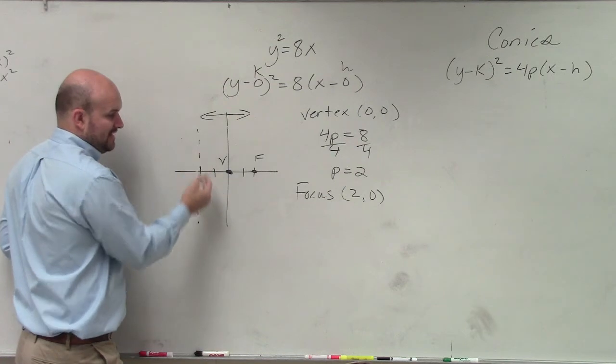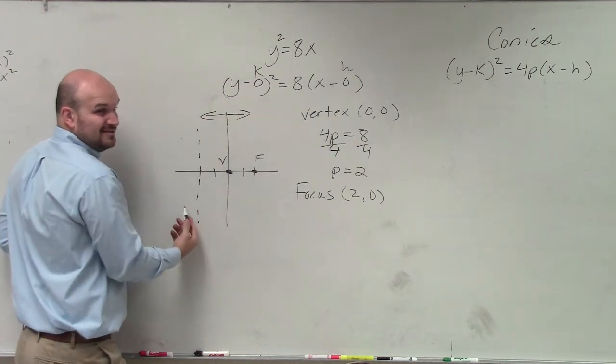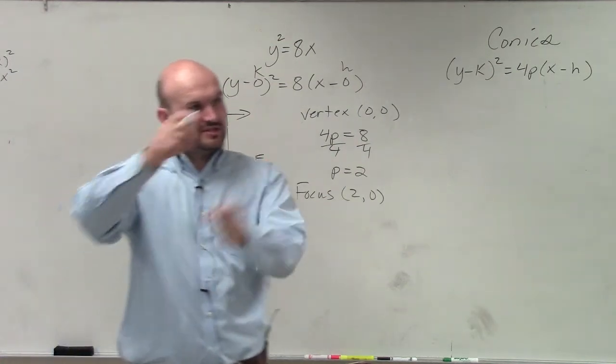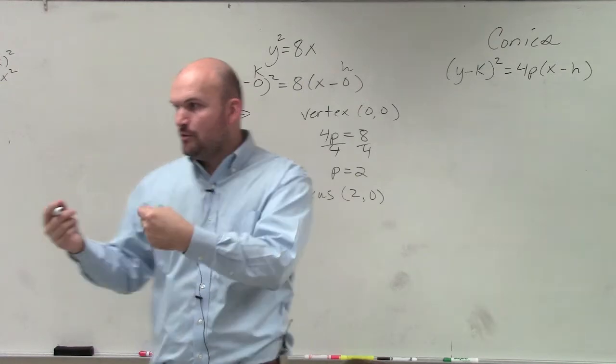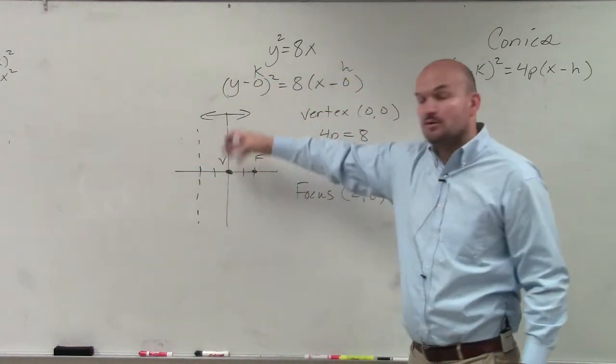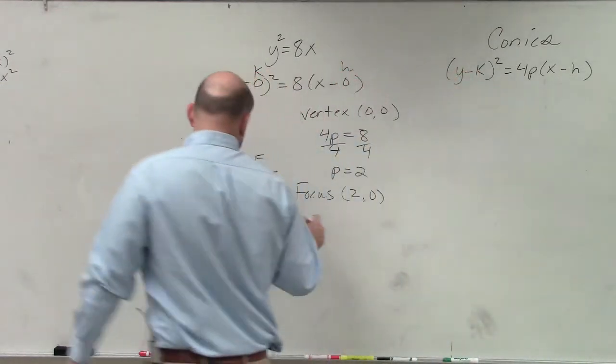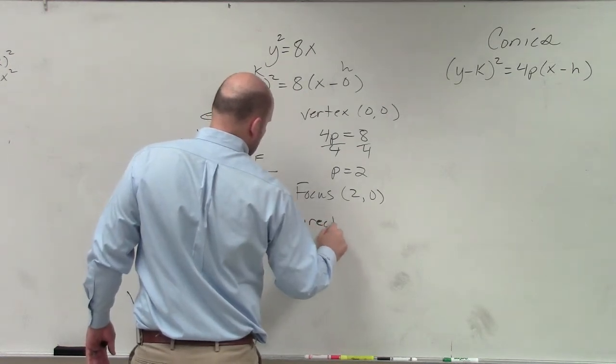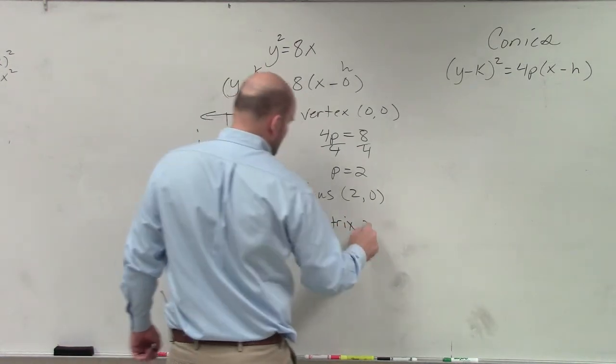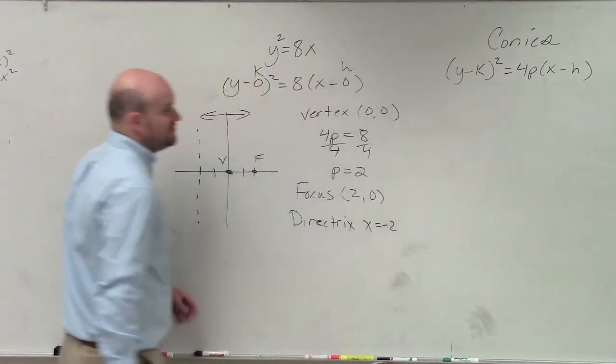And then if you guys notice that that's a vertical line, right? Because remember in your formulas, you guys had all these different orientations. But when we have a sideways parabola, we have a vertical line. So vertical lines, x equals negative 2.